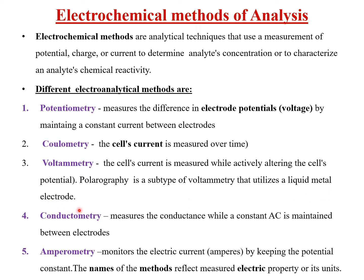Polarography is a subtype of voltammetry — it utilizes a liquid metal electrode. Conductometry measures conductivity using a constant AC between the electrodes. Amperometry monitors electric current, measuring amperes by keeping the potential constant. The names of the methods reflect the measured electric property or its units.